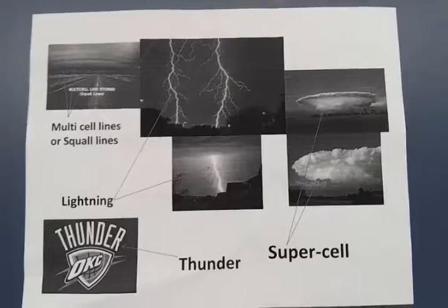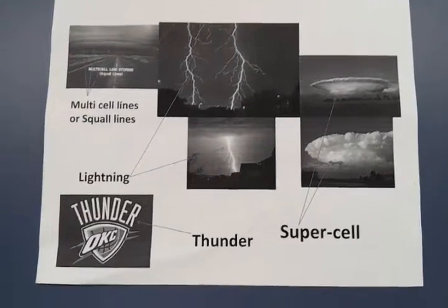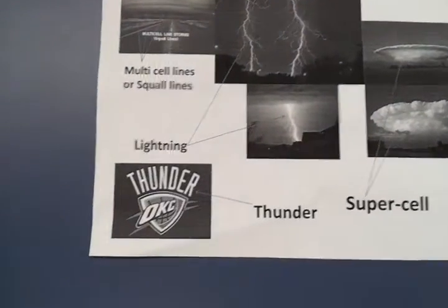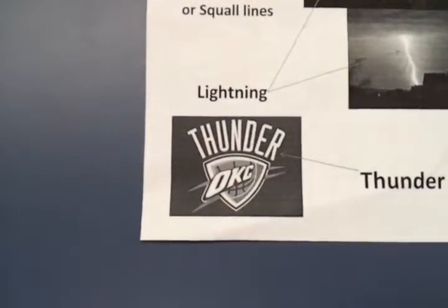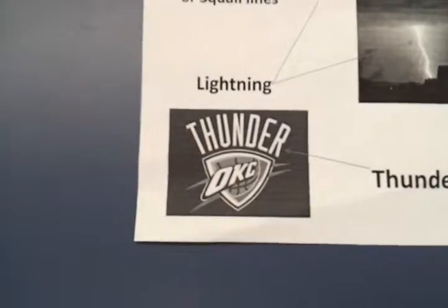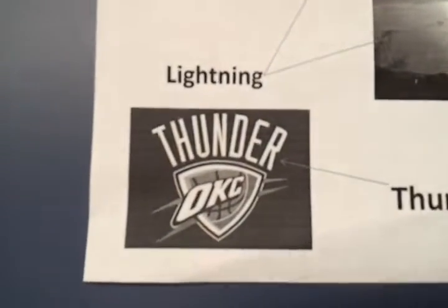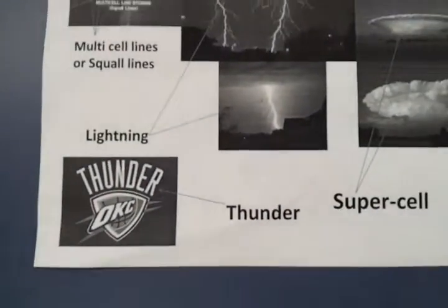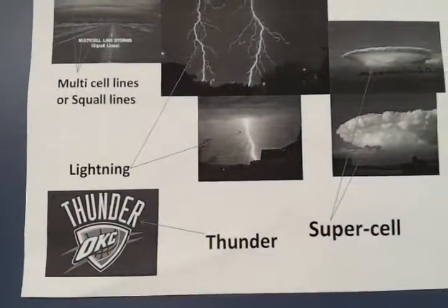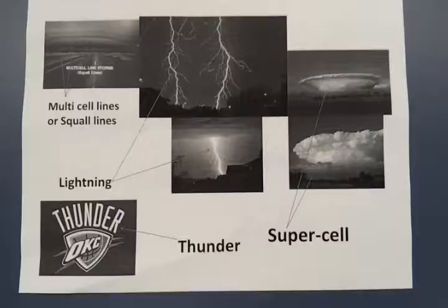Thunder is the loud bang heard after lightning is seen. The loud bang is the superheated air around the lightning bolt expanding at the speed of sound. Because sound travels much more slowly than light, the flash is seen before the bang, although both occur at the same moment.